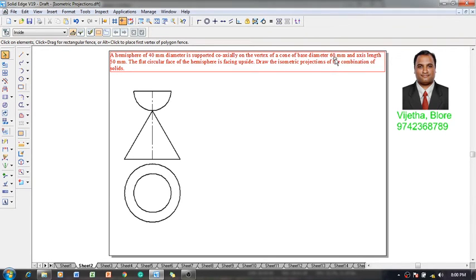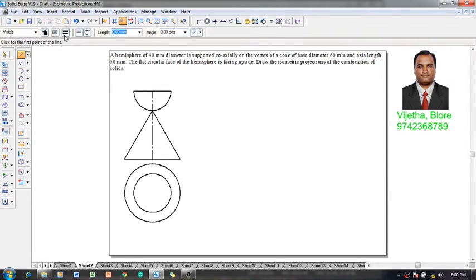Now we know that the bottom base diameter is 60 millimeter, so we have to enclose the circle in the form of an ellipse. To construct an ellipse, we will follow a method like this. We have to construct a 60 mm square, connect the points, and prepare to construct an ellipse.